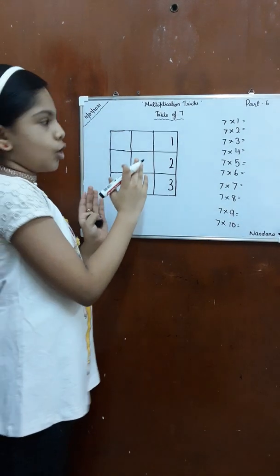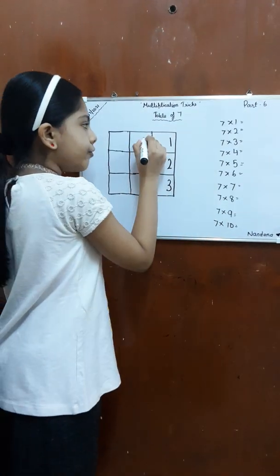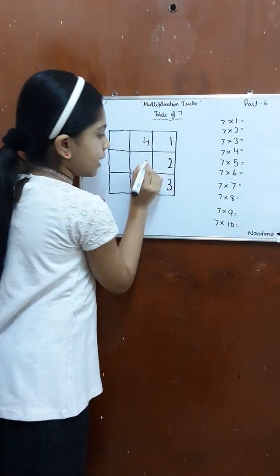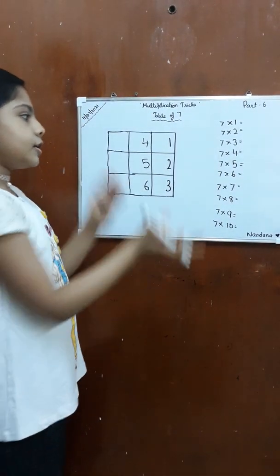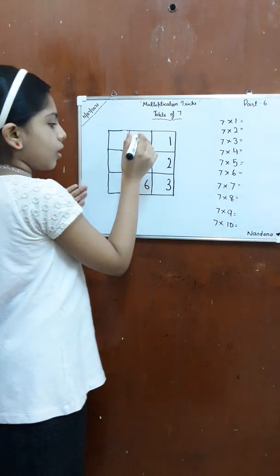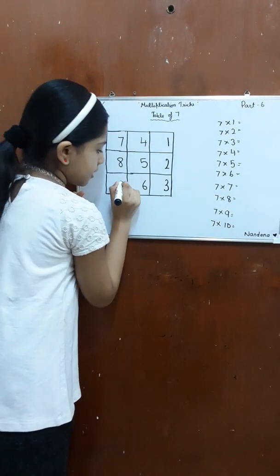Let's go to the next column, to the top box, and write number 4, then number 5, then number 6. Then the next column: 7, 8, 9.